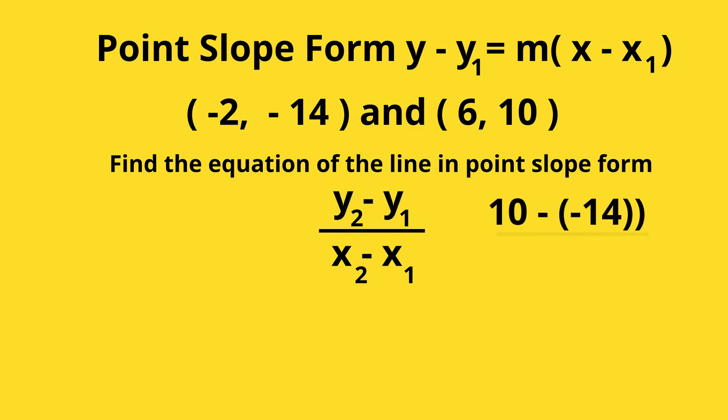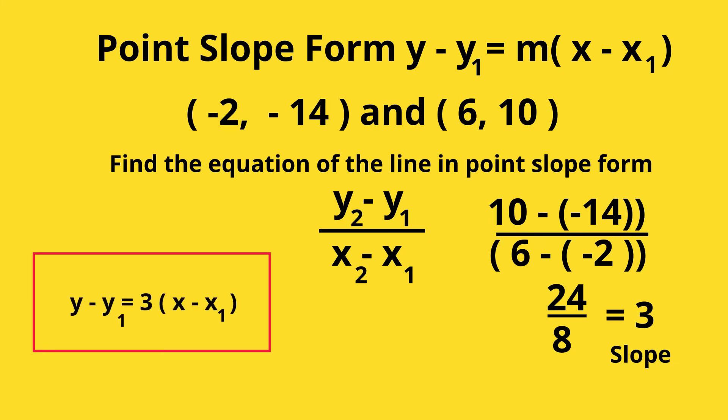I'm going to plug in values. I have 10 minus a negative 14 over 6 minus a negative 2, which becomes 24 over 8 equals 3. Now I'm going to plug it into the formula. I have y minus y₁ equals 3, because that's the slope, times x minus x₁. Now let's get the values of x and y.